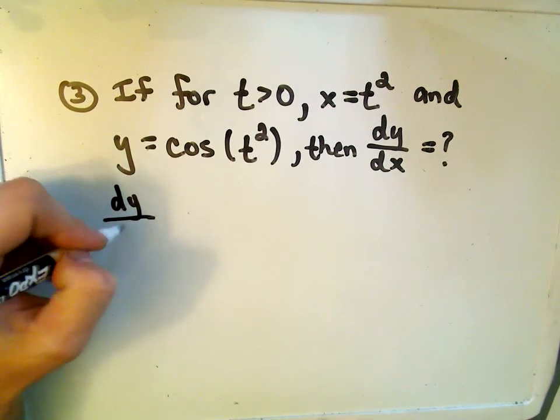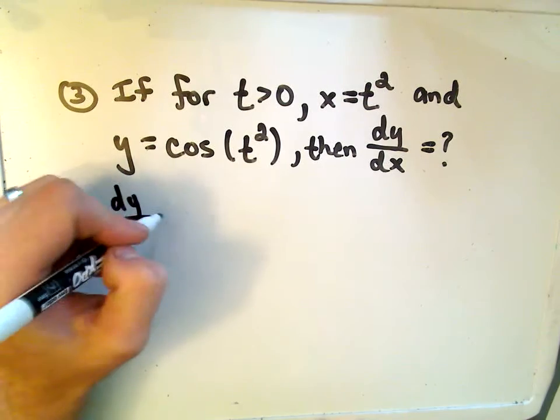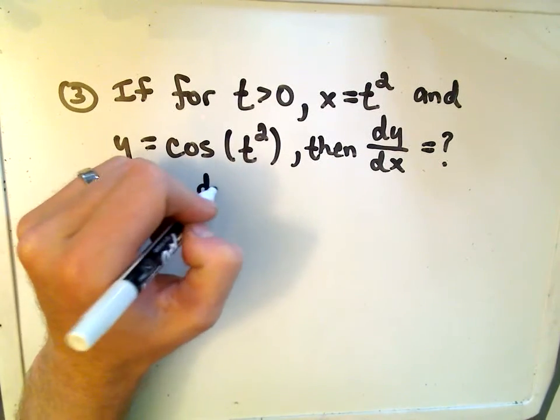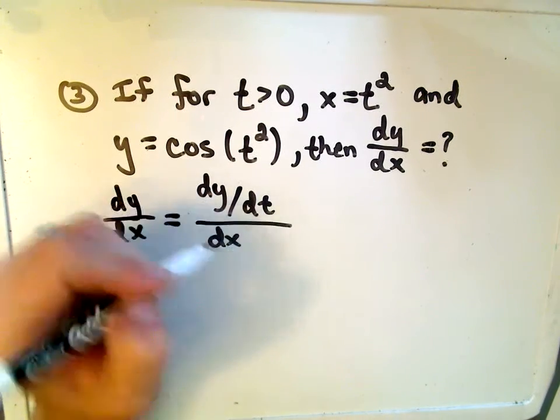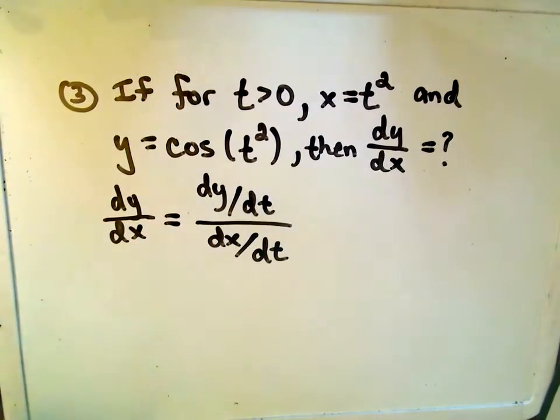Well, remember the derivative of y with respect to x when we have a parametric curve. All we have to do is take the derivative of y with respect to t, and then we simply divide that by the derivative of x with respect to t.